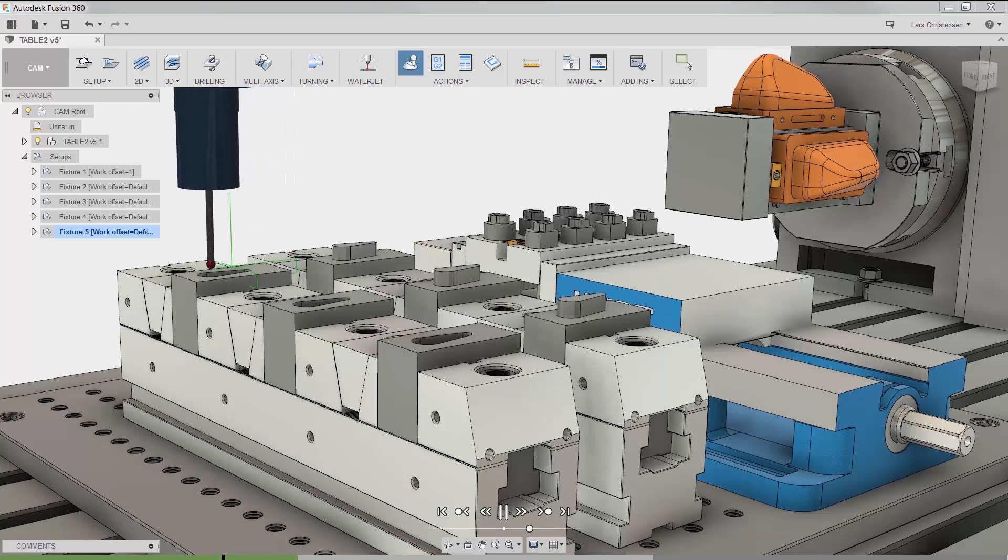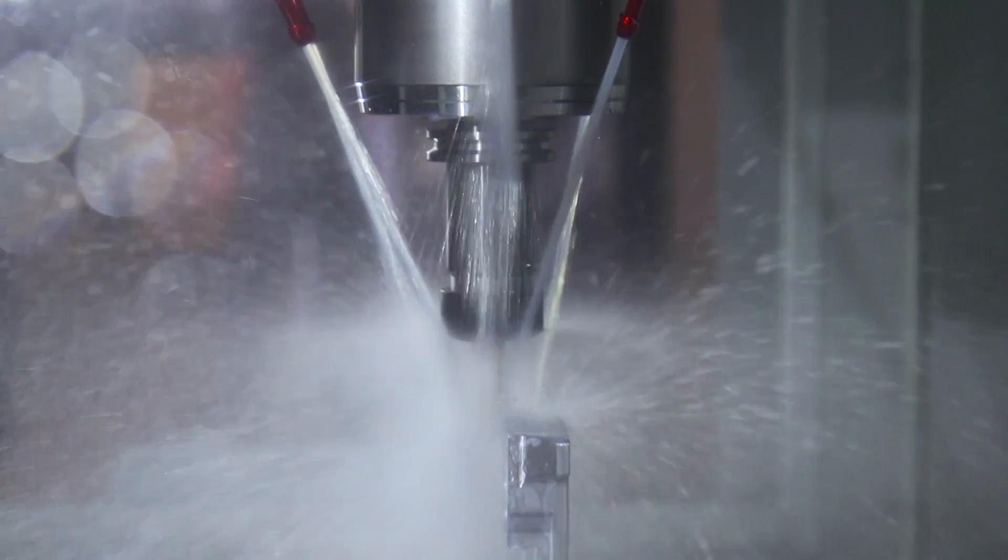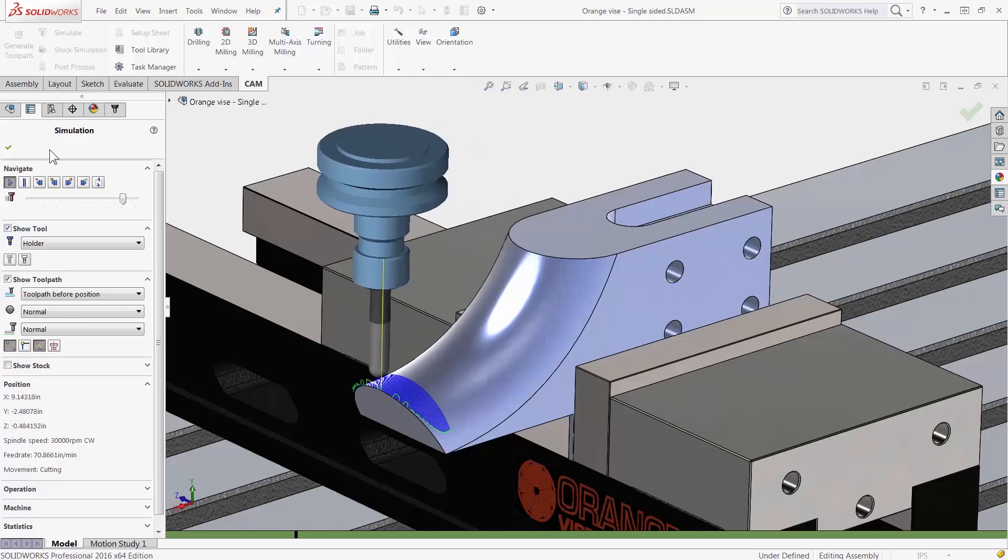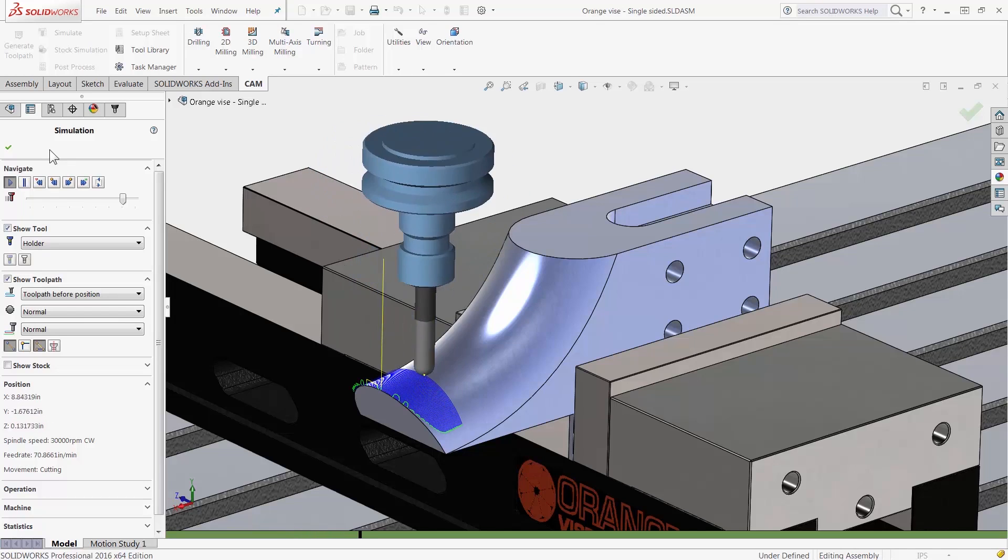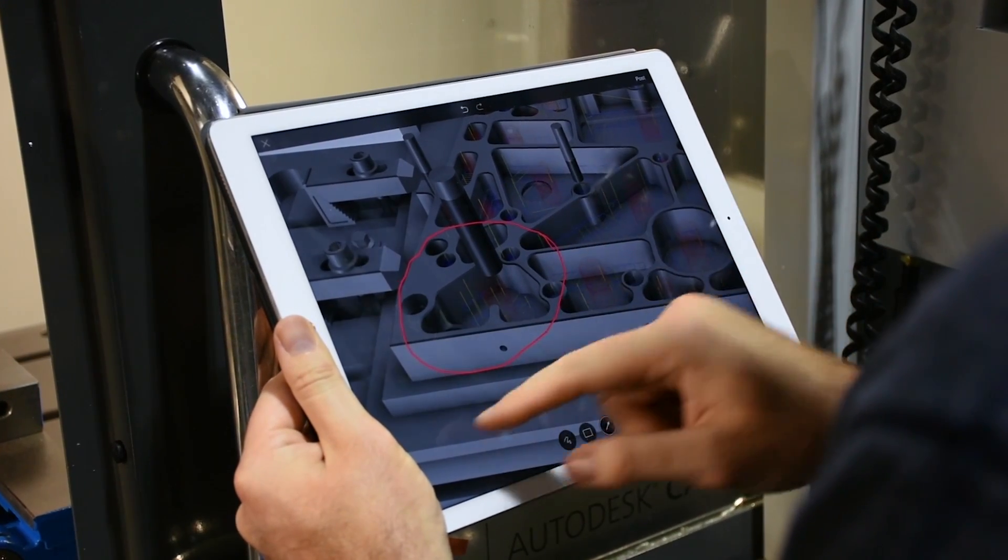Autodesk HSM is an underlying toolpath technology that exposes itself inside of the environment where you're doing your design work. There's the HSM plugin for SOLIDWORKS, an add-in for Inventor users, and we've built a completely integrated solution with our Fusion 360 product.